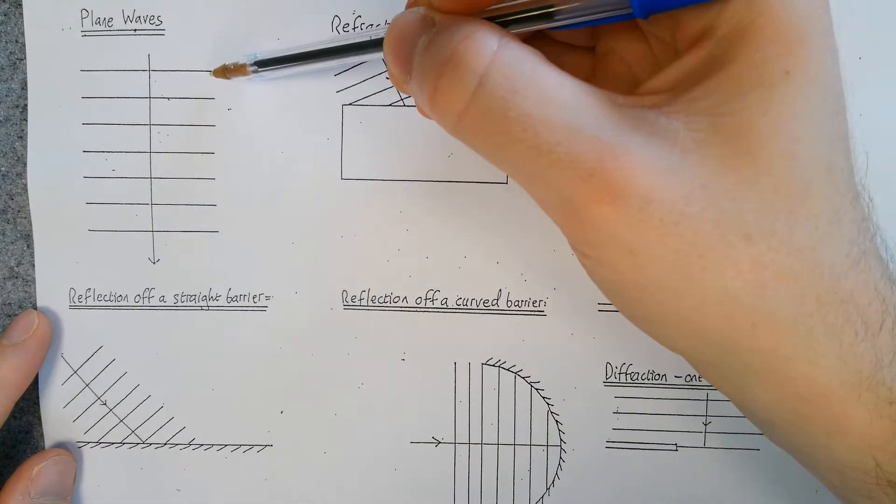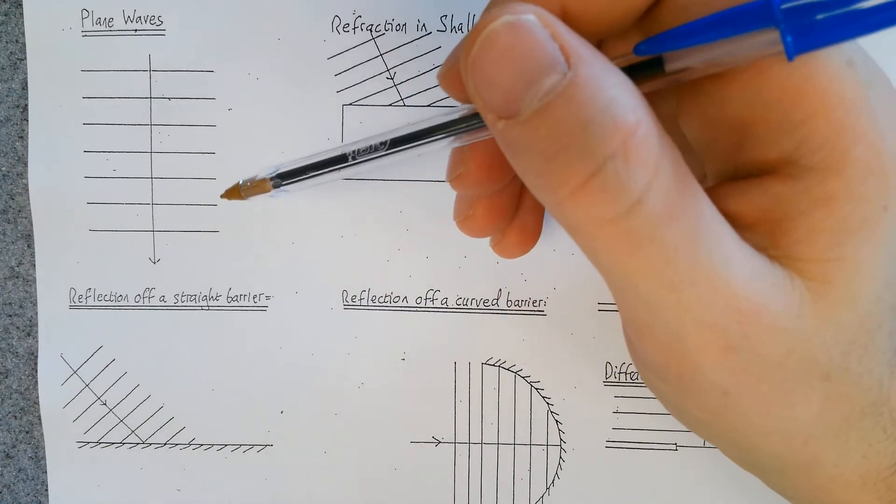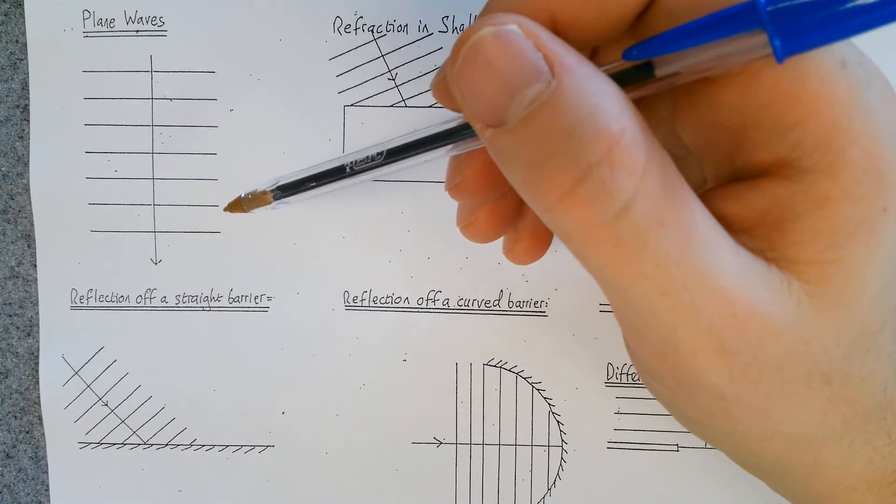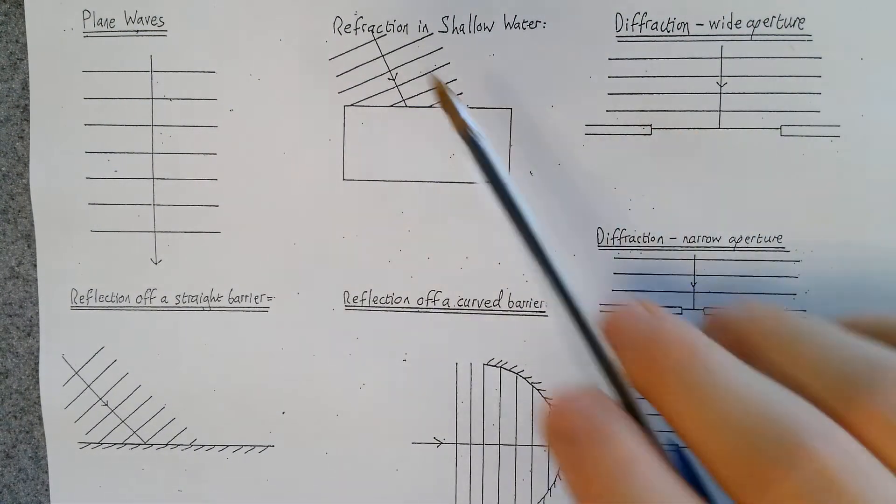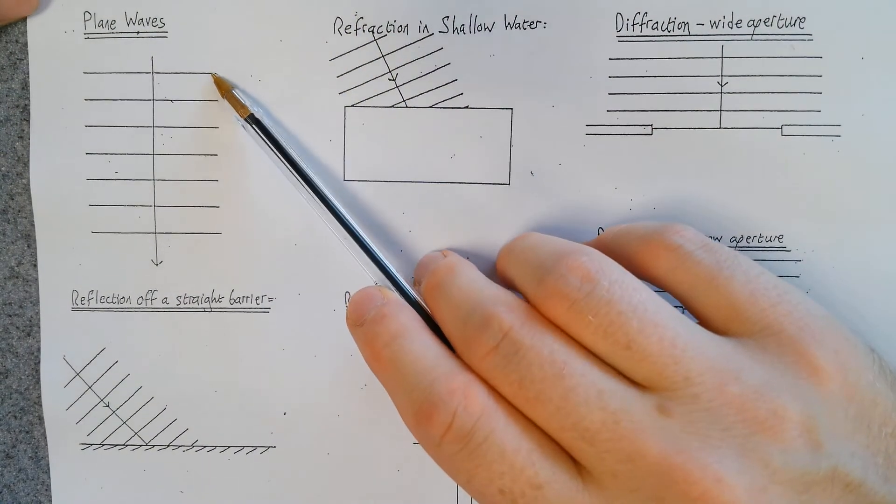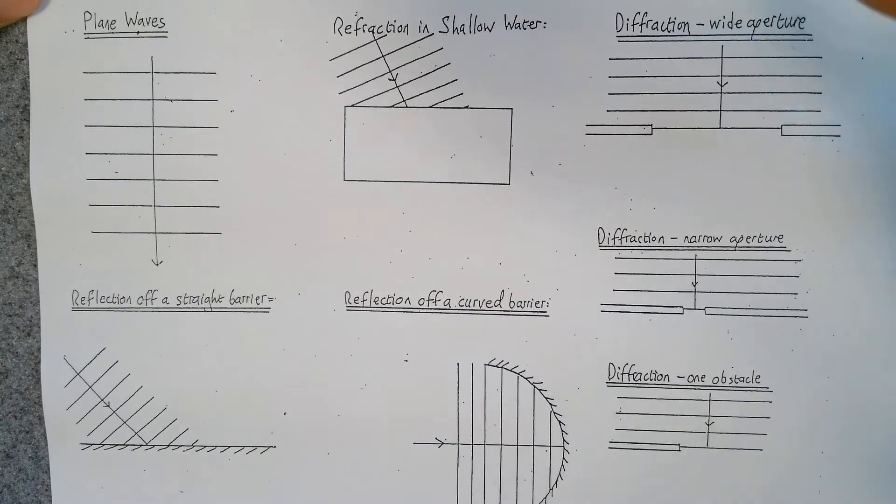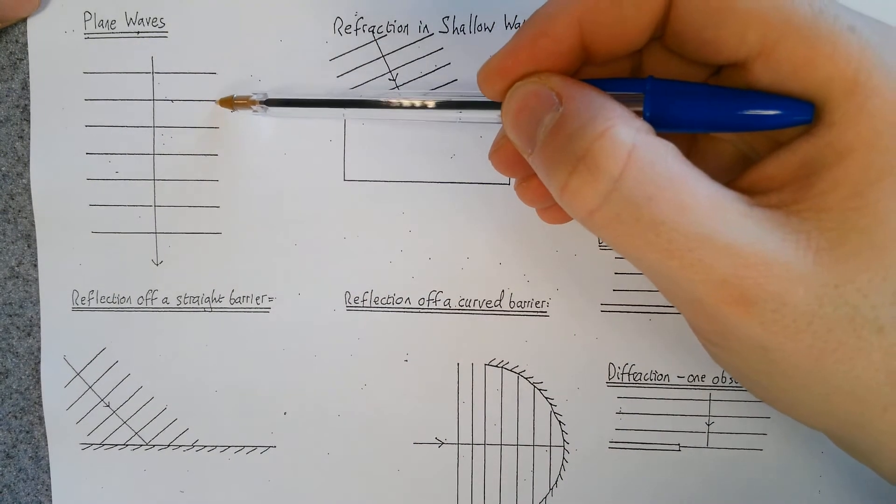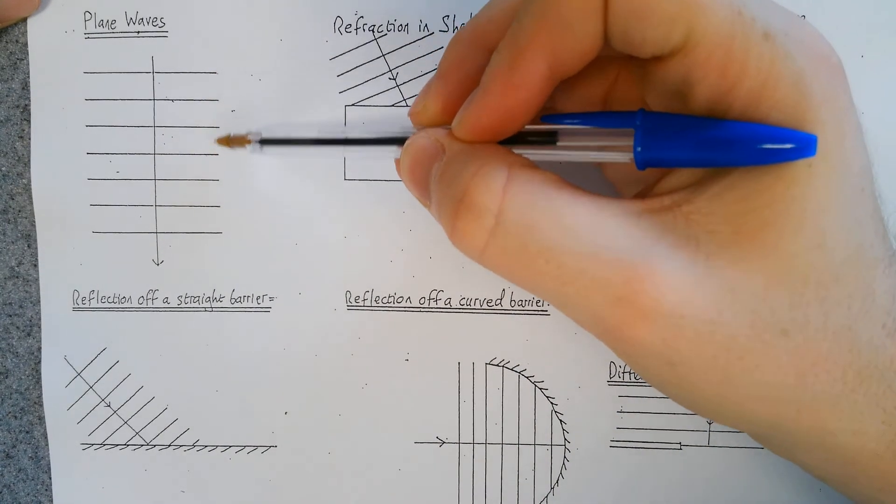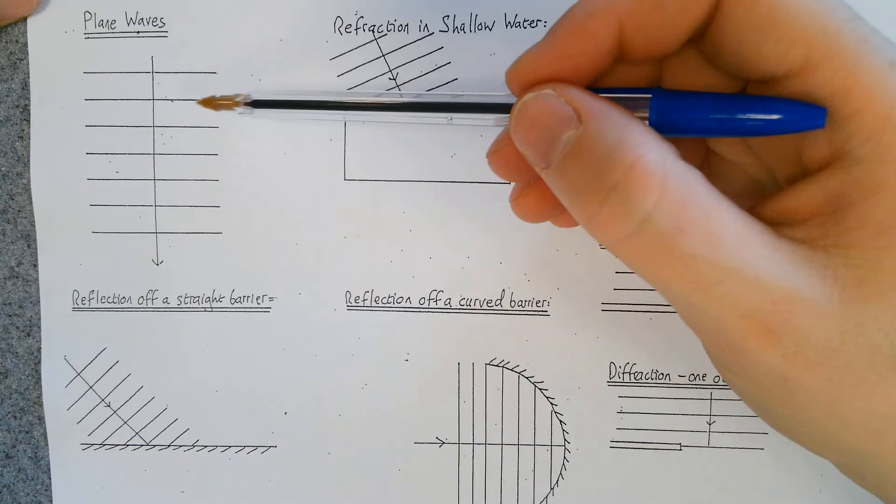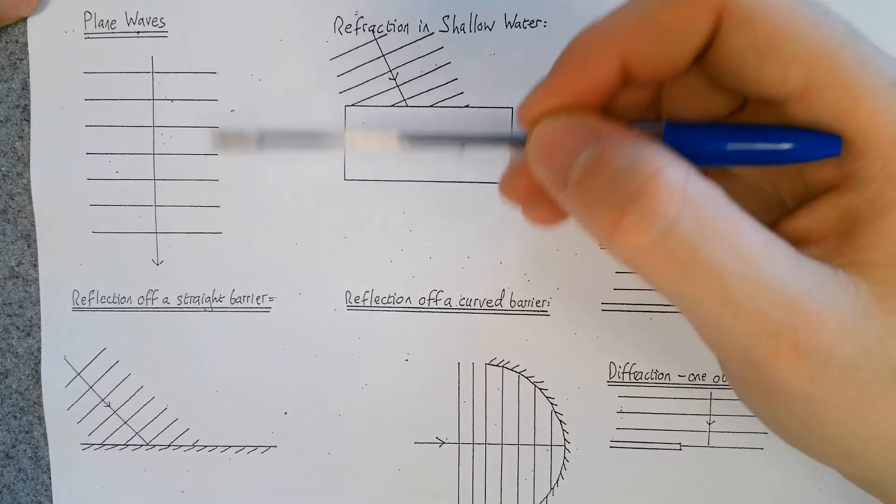What each of these is showing are what we call wave fronts. In the ripple tank that would be either the crest or the dip of a wave. The dark patch in the ripple tank would mean that's the trough of a wave, so each of these represents one wavelength of the wave. As you can see, the wavelength here is not changing because all of the gaps are constant. That's all you need to know about this first one.